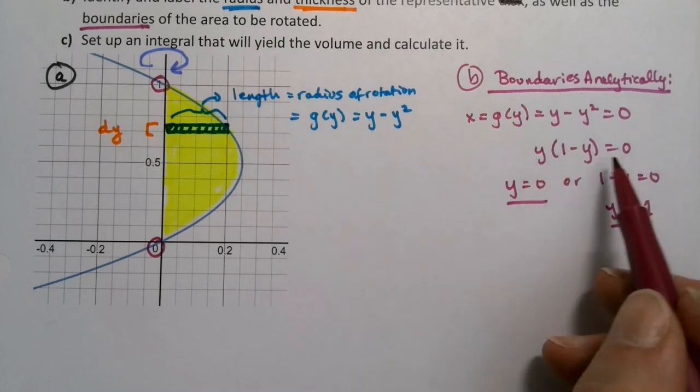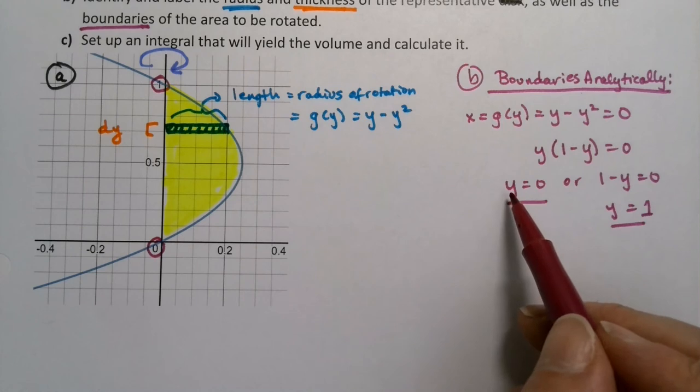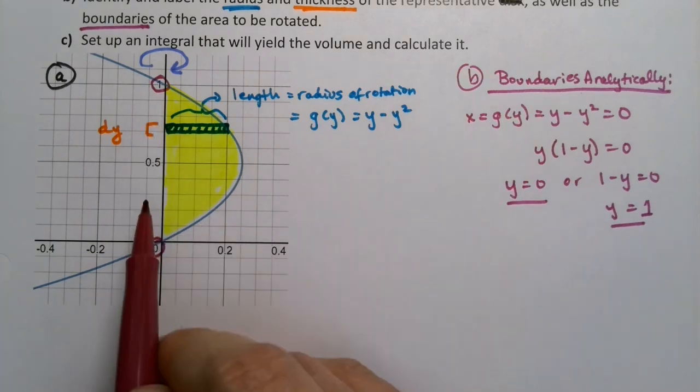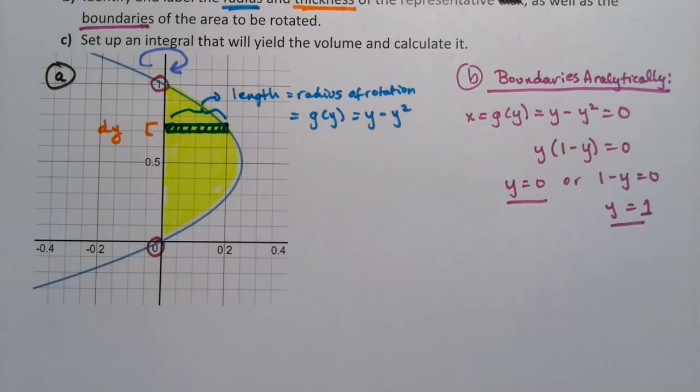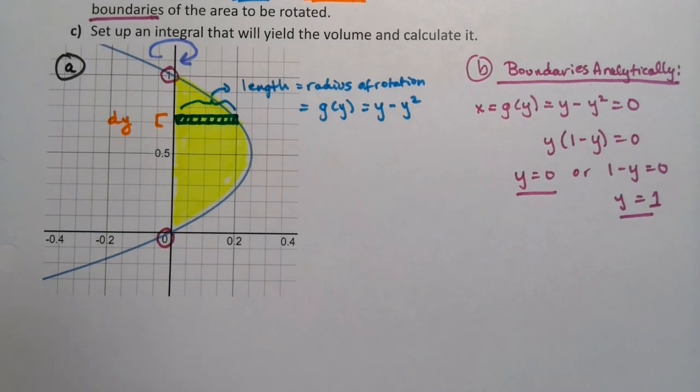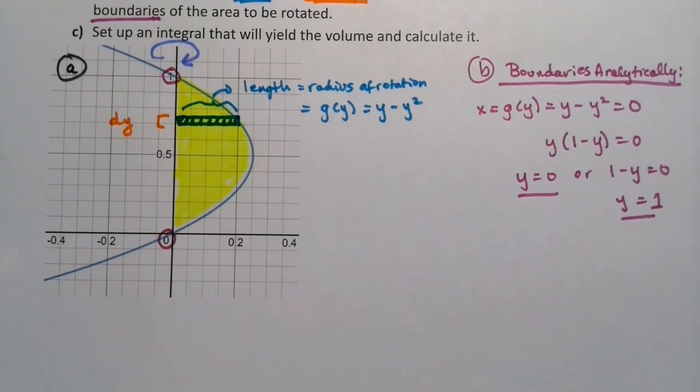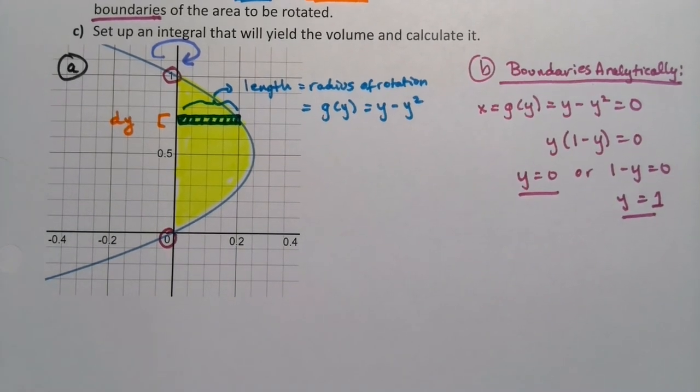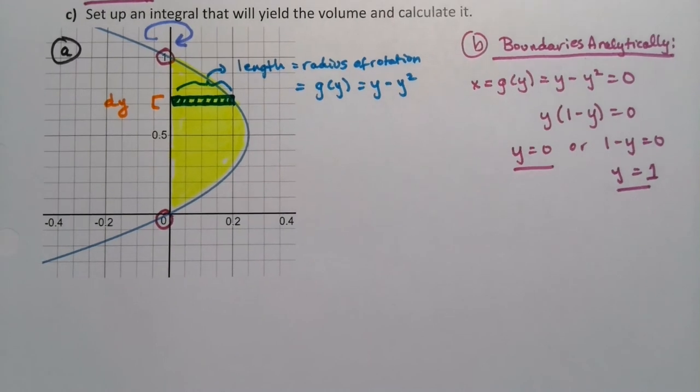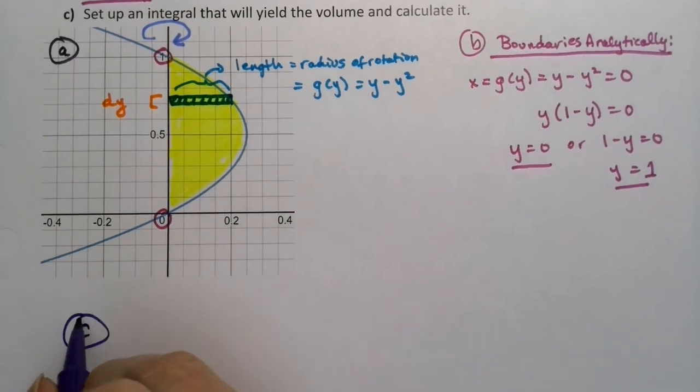The algebra rule is the zero product rule: two things multiply to make zero, either one of them is zero. So either y is zero or y is one, which lo and behold we found with Desmos as well. You're not doing that necessarily for this problem, you're doing it for future problems you might have where it might not be so obvious and you want to be able to find them analytically.